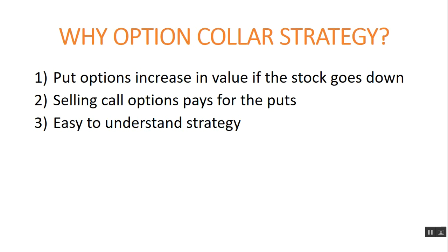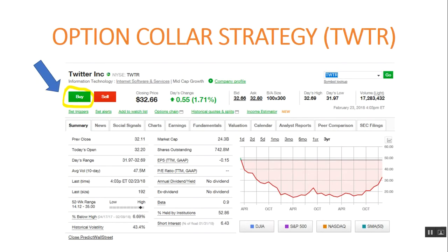Nothing complicated about this at all, as you will see as you watch through this video. So, Twitter — the first thing you do is you buy some Twitter. You buy 100 shares. Today is Saturday, February 24th, 2018. The closing price, which was yesterday on Friday, was $32.66. The bid is $32.66, the ask is $32.80, so let's say that we get it for $32.75. Congratulations, you are the proud owner of 100 shares of Twitter.